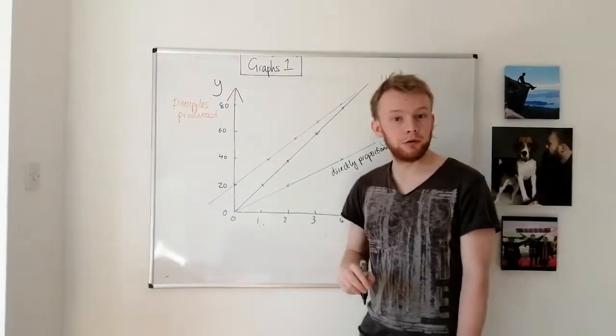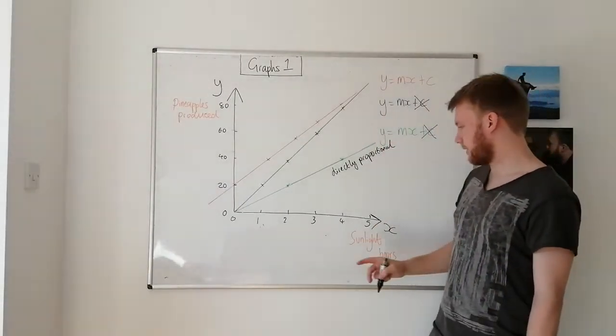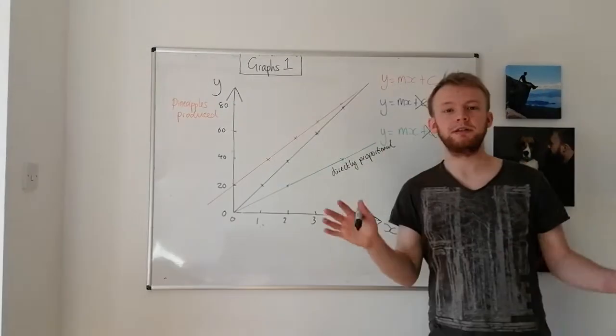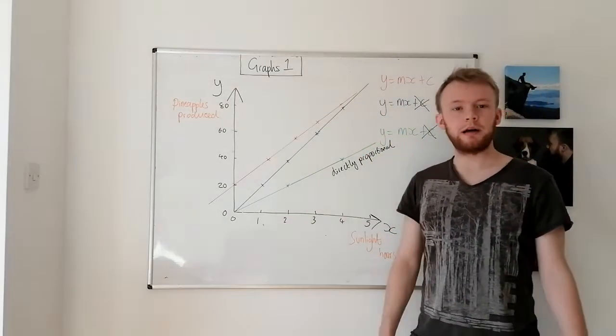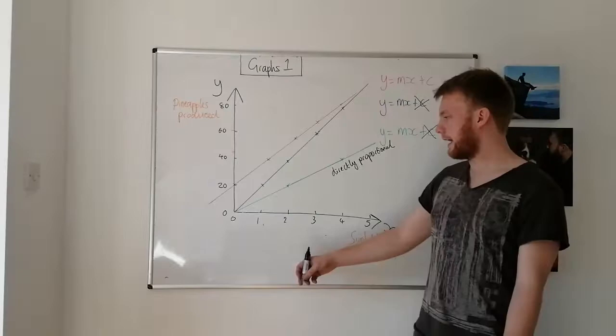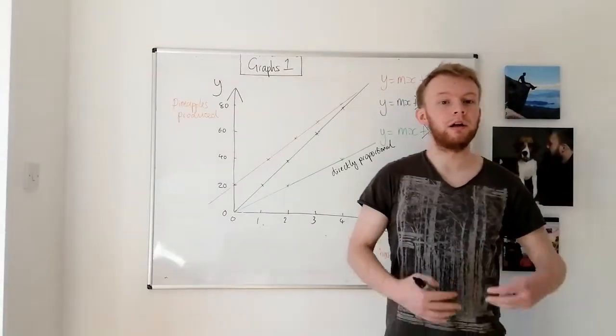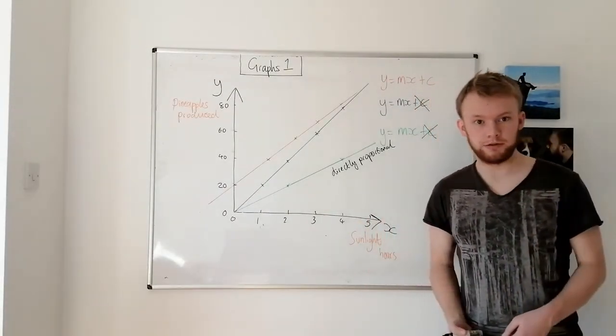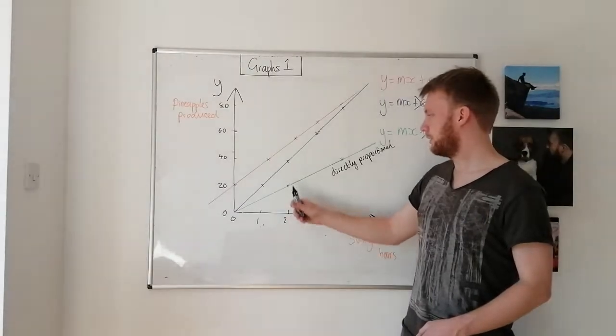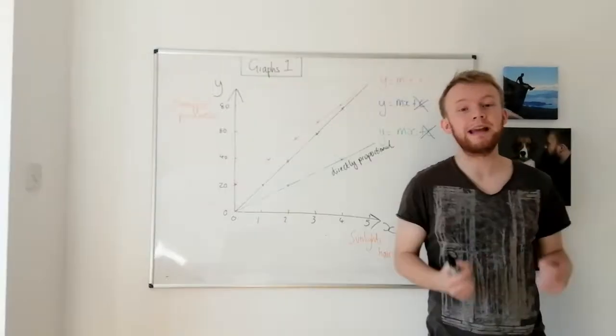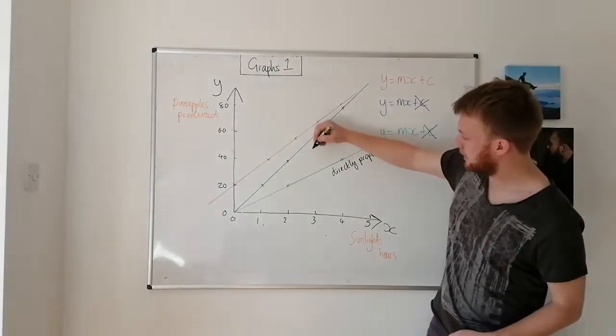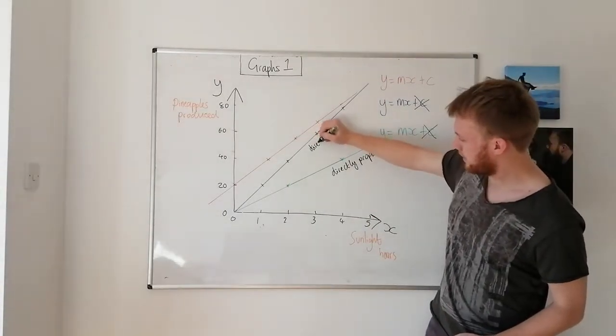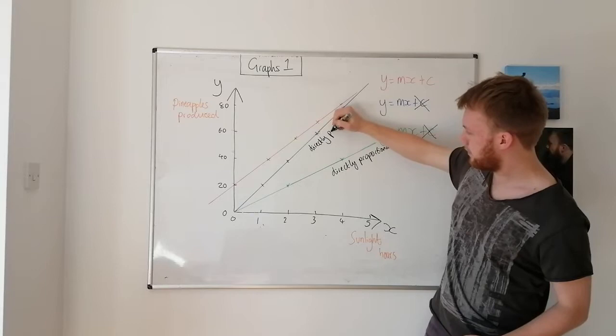Let's look at the blue line now. So for the blue line, maybe this was a different field. I started off with one sunlight hour producing 20 pineapples. If I double the number of sunlight hours, does the number of pineapples produced double? Two is 40. So yes, that's also a directly proportional relationship. Directly proportional.